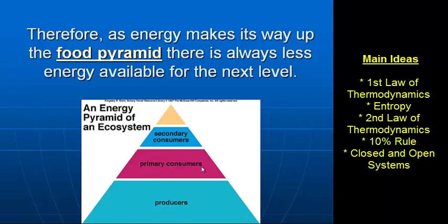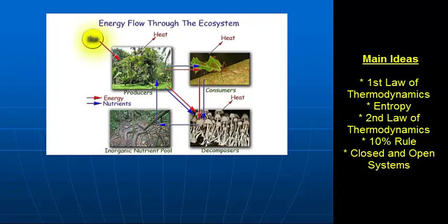Food pyramids have the producers at the base, then primary, secondary, and tertiary consumers. If I inverted this triangle so the tertiary consumers were at the bottom, it would fall over. If an ecosystem was built with very few plants and a lot more primary consumers going up to many top predators, there wouldn't be enough food available and that ecosystem would collapse or topple over.